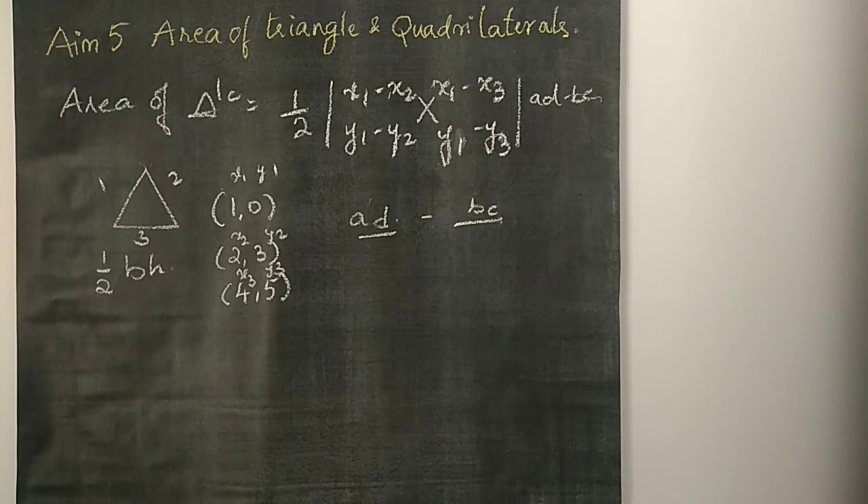I think you understood the method. Now there is one more formula — there are totally three formulas to find the area of a triangle. The second formula is: half into x1, x2, x3, x1 in the top row and y1, y2, y3, y1 in the bottom row, using cross multiplication. The simplest one is the first formula — you write all the values and cross multiply using ad minus bc. The second one is longer and takes more time for calculation, so it is better to use the simpler one.